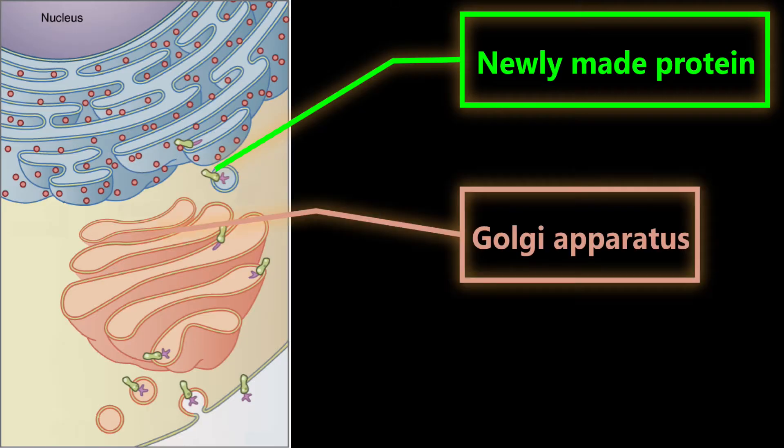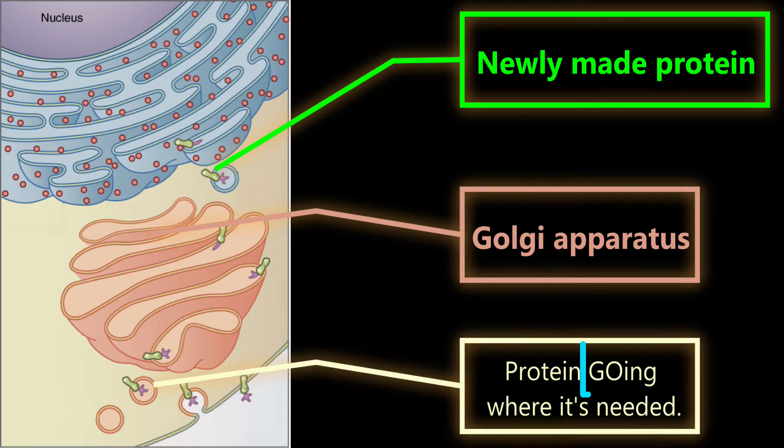After that, the protein goes into the Golgi apparatus, which is like a taxi service for moving the protein to the correct part of the cell. You can remember this because the first two letters spell GO, and this organelle helps the protein go where it is needed.